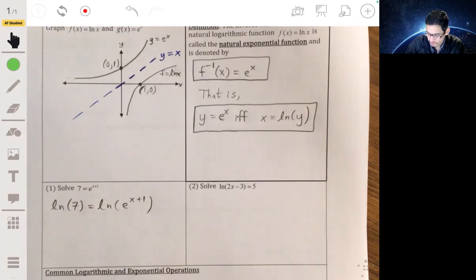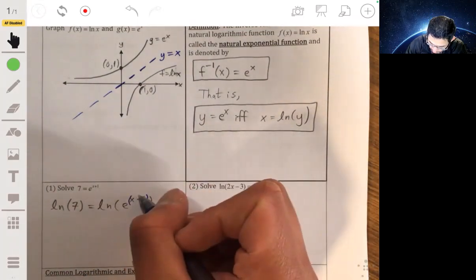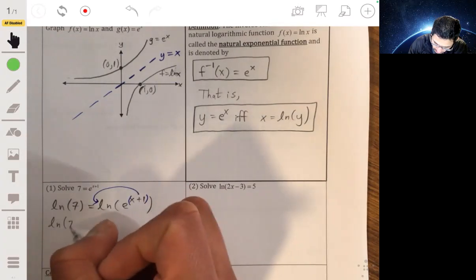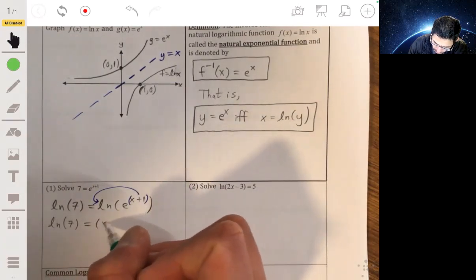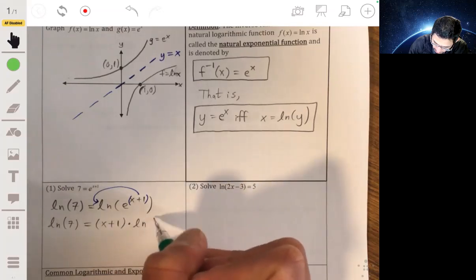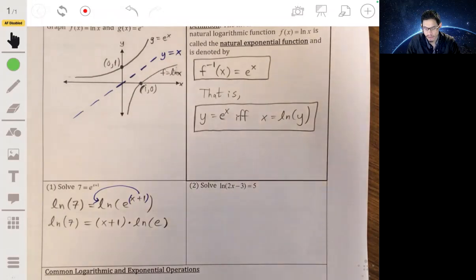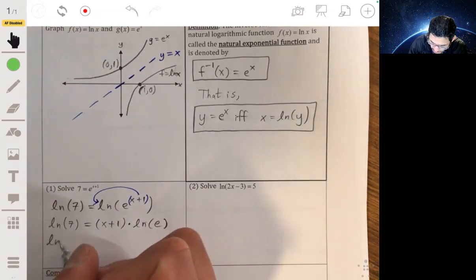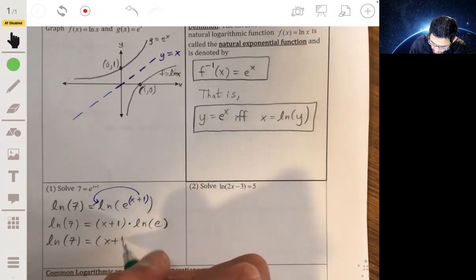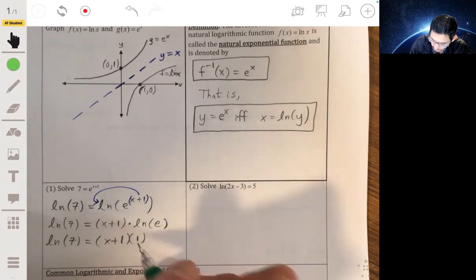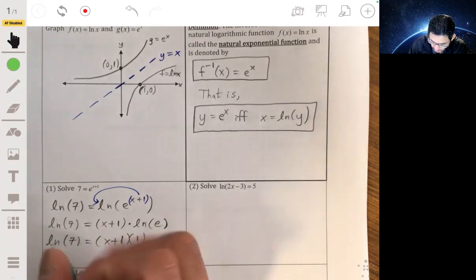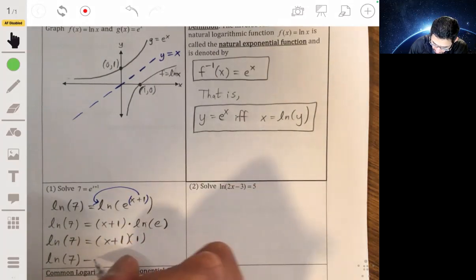And then from here, we can remember, use the property of logarithms. This is our exponent, and this can just go as a coefficient. So this becomes the natural log of 7, equal to x plus 1, times the natural log of e. And remember, the natural log of e, what number do you raise e to to get e? It's just going to be 1. So this becomes the natural log of 7, which is just x plus 1. So all you're doing now is just solving for x. So the natural log of 7 minus 1 is equal to x.